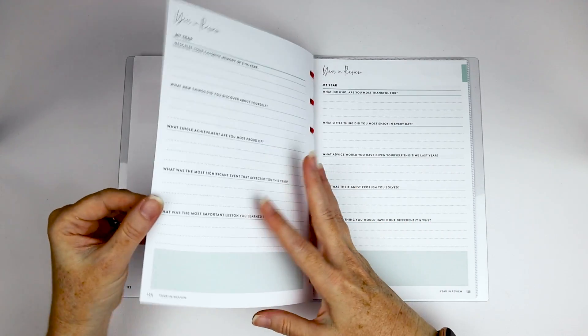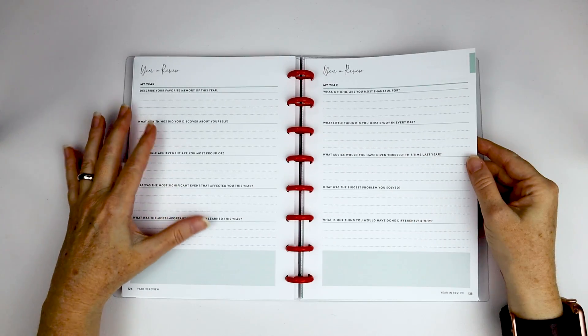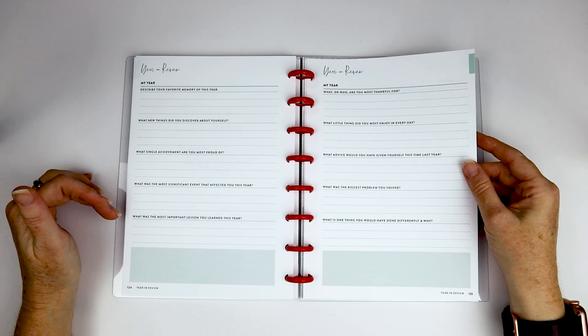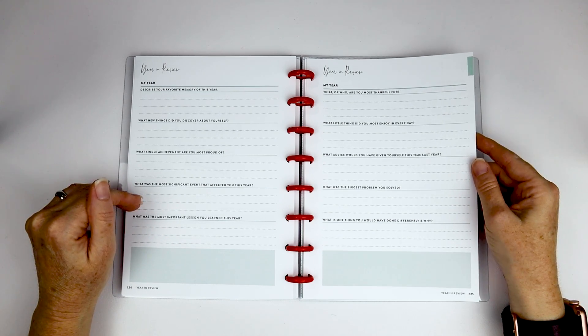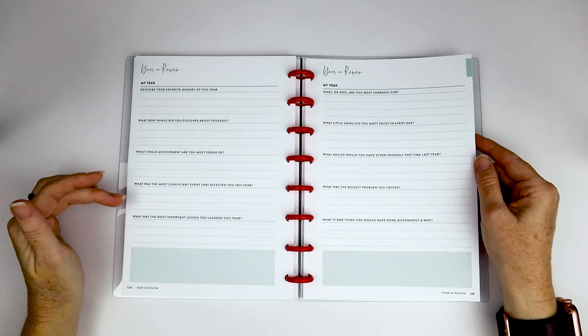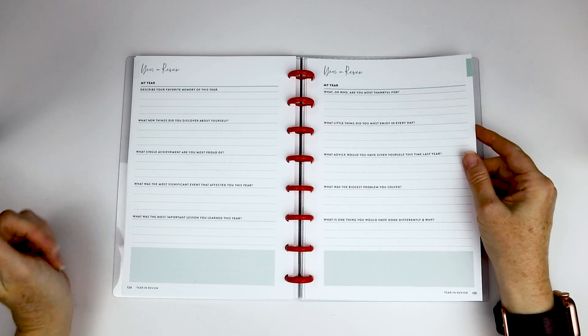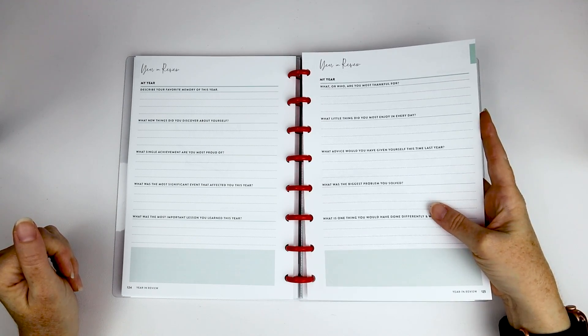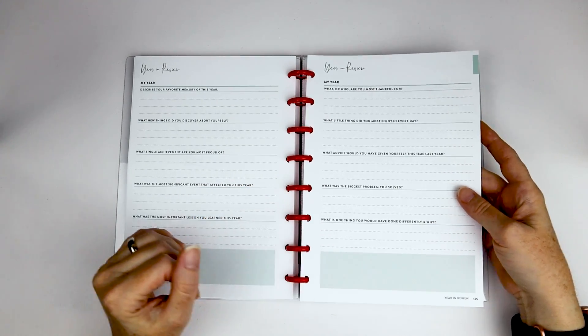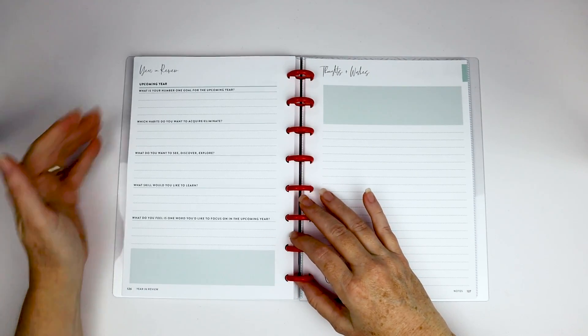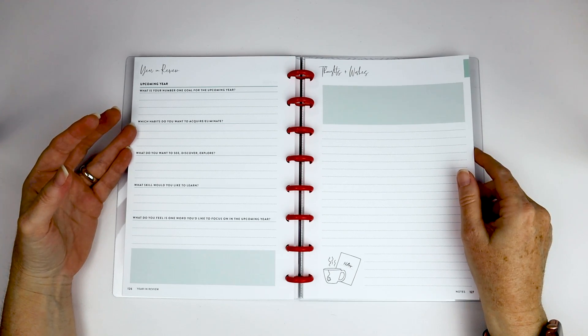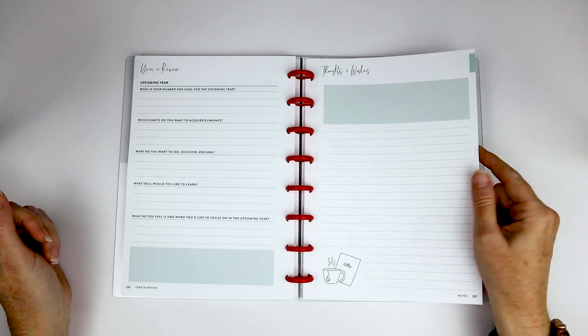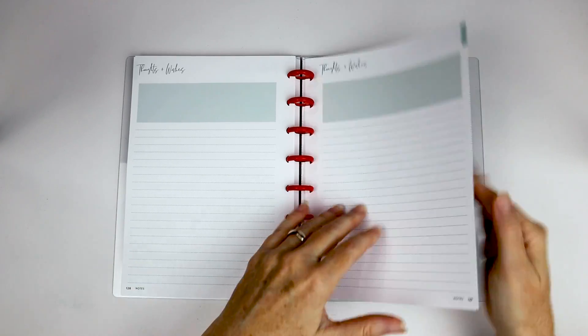Reflection. So you have your year in three words. The year in review. So there's different questions. Describe your favorite memory. What new things did you discover about yourself? What single achievement are you most proud of? Most significant event that affected you this year? This is being filmed in 2020. I'm sure we can all name that one significant event. Most important lesson you learned this year. Who or what are you most thankful for? What little thing did you most enjoy in every day? What advice would you have given yourself this time last year? What was the biggest problem you solved? What is one thing you would have done differently and why? What is your, this is for upcoming year. What is your number one goal? What habits do you want to acquire or eliminate? What do you want to see, discover, explore? What skill would you like to learn? What do you feel is one word you'd like to focus on?